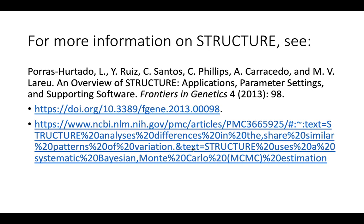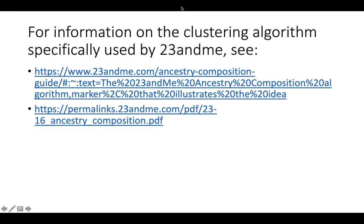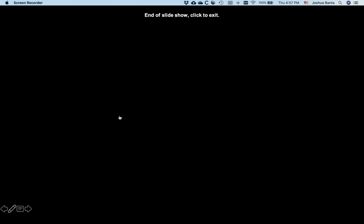For information specifically on the program Structure, I recommend this paper, which can help you dive into the mathematical details of how the software works. If you want information on the clustering algorithm used by 23andMe — called Ancestry Composition — I recommend two sources from the 23andMe company. Note that 23andMe doesn't use Structure's algorithm; they have their own, but it does the same thing. That's a brief overview of the program Structure to give you the general idea so you can go ahead and start using it in your own research.